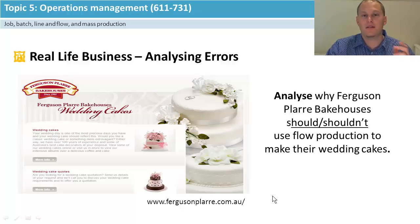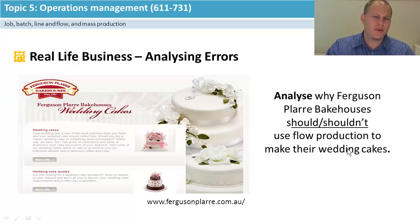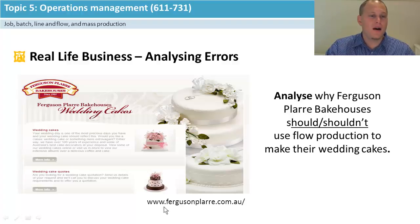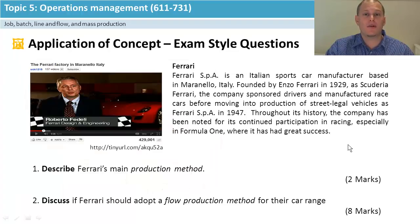I'm going to argue they shouldn't switch to flow. One main strength of keeping job production is they can maintain their quality and brand loyalty, backed up by customer testimonials showing people really value their job production approach. The disadvantage of switching to flow is they'd lose quality and uniqueness — these products are made specifically to customer orders. Overall recommendation: don't go into flow production. It causes big changes to the brand they have now and hope to have in the future.